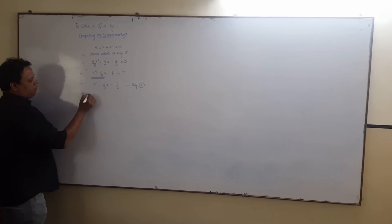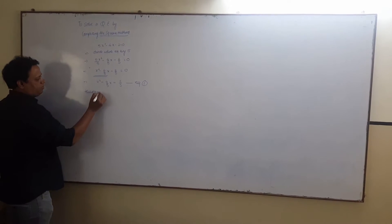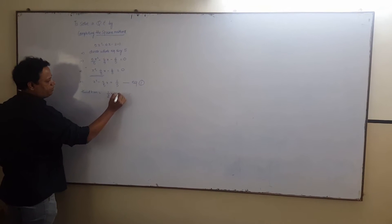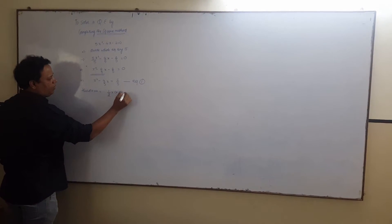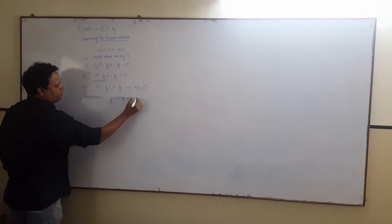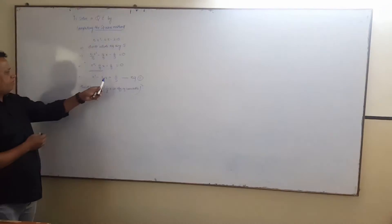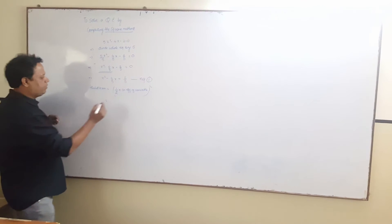Now, third term is equal to half into coefficient of variable whole square. Now, what is coefficient of variable? See over here, variable is x, 4 upon 5. So,